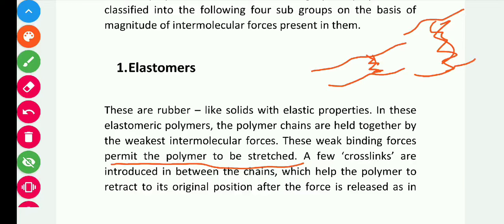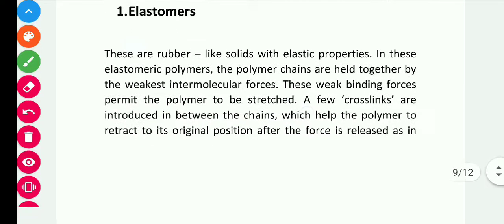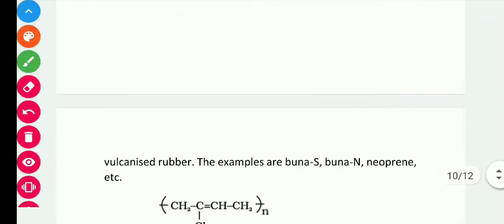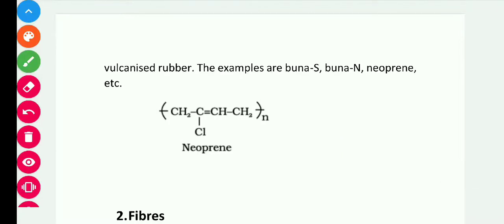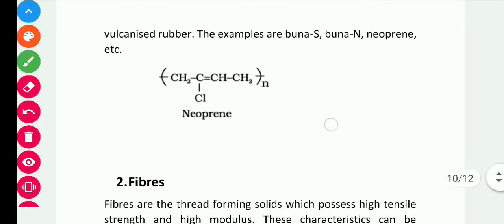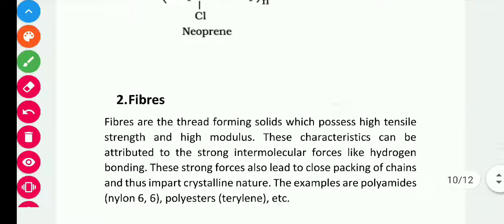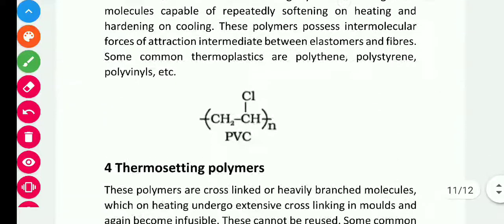A few cross-links are also introduced between the chains which help the polymer to retract to its original position after the force has been released. You have seen this with vulcanized rubber — when you stretch it with a weak force, the chains move apart, and after releasing the force it comes back to the original position. Examples of elastomers are Buna-S, Buna-N (where N stands for nitrile), and neoprene.